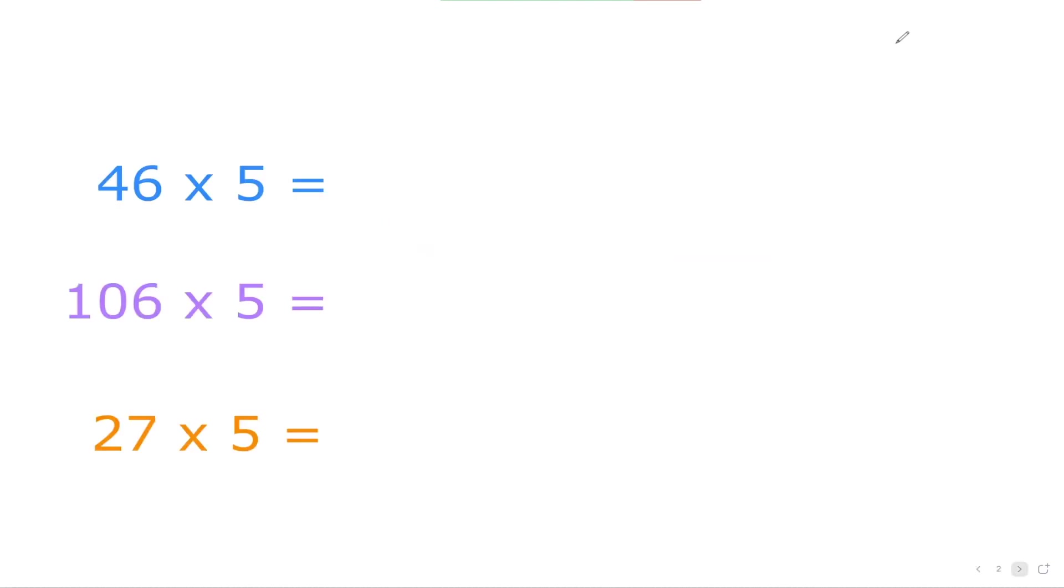Let's say in the starting, if you want to multiply any number like 46, 106, or 27 with 5, what you should be doing. Look at the first number, like this is 46. So make it half. 46 divided by 2 is 23, and then add the 0. You're done. That's quite good, isn't it?